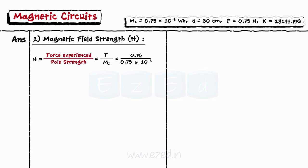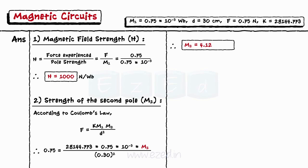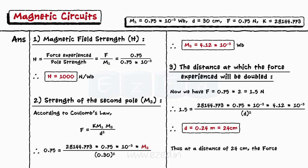To find the strength of the second pole, we use Coulomb's law. Substituting the given values into the formula, we get the strength of the second pole M2 = 4.12 × 10⁻³ Weber. Now, with the force doubled, using the same formula again and substituting the new value of force, we get the distance D = 24 centimeters. Thus, at a distance of 24 centimeters, the force experienced will be doubled.